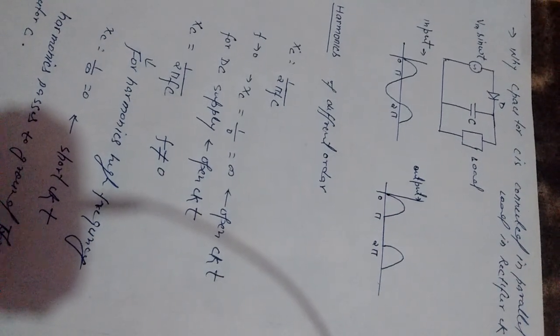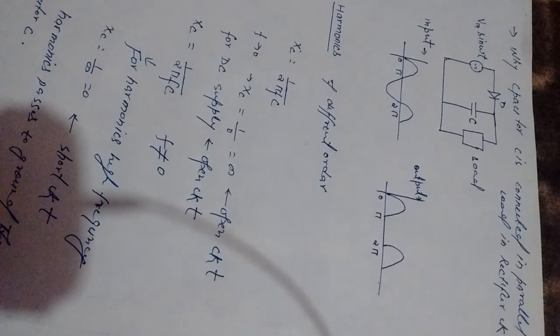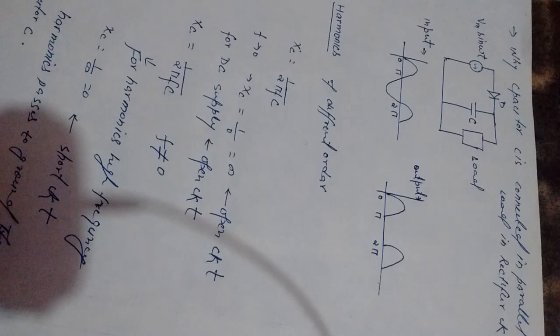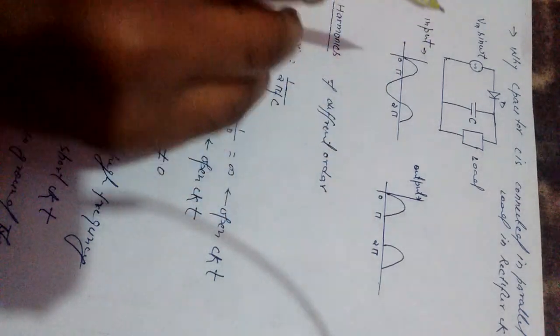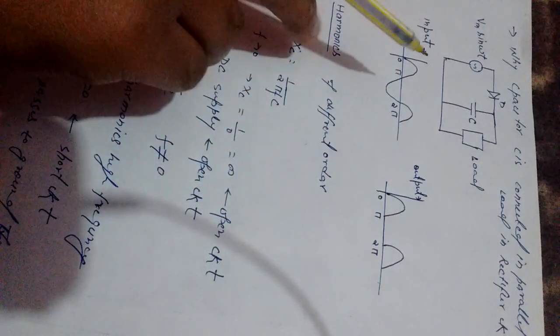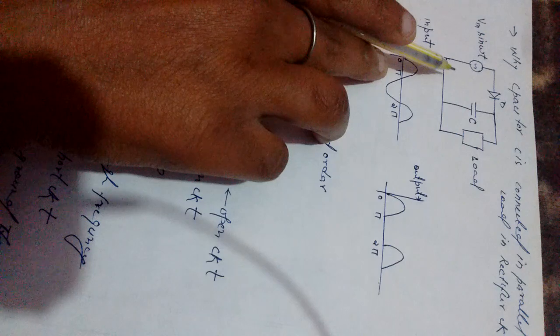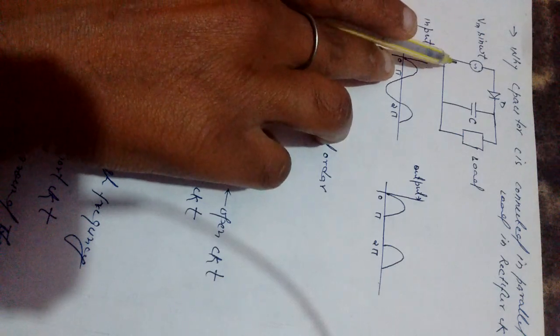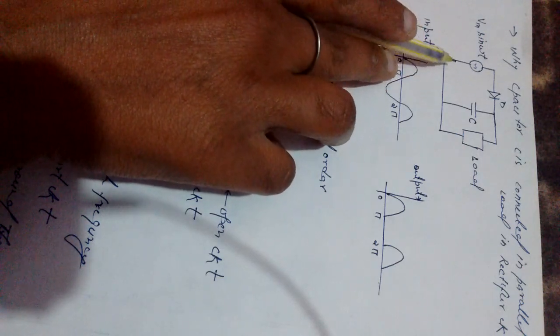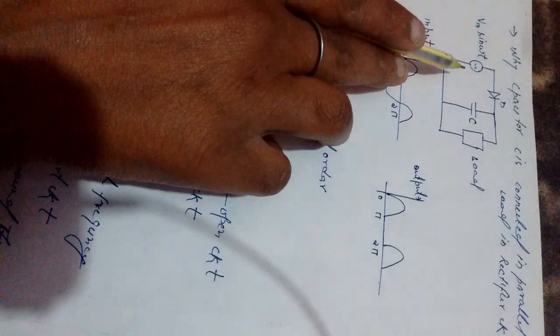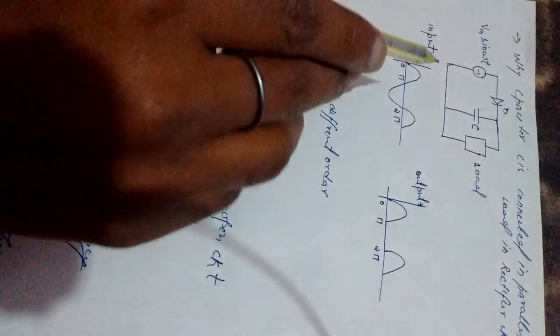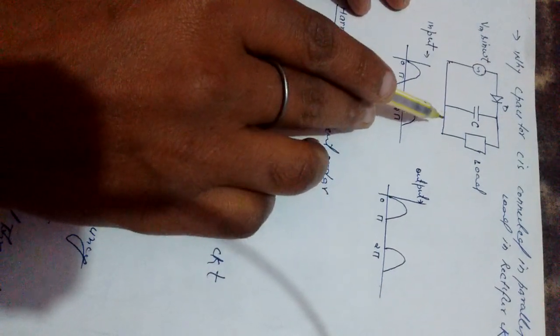Today I will discuss why a capacitor is connected in parallel to the load in a rectifier circuit. See here, a rectifier - a diode is placed and the rectifier rectifies the AC supply. And see, capacitor C is connected in parallel to the load.